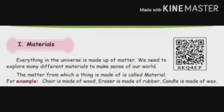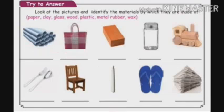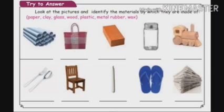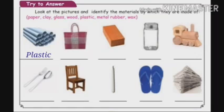Next, we will see a small activity. Look at the pictures and identify the materials by which they are made. The choices are: paper, clay, glass, wood, plastic, metal, rubber, wax. First one — PVC pipes are made of plastic. Second one — basket is made up of plastic. The remaining ones are for your homework. Do it and send photos.